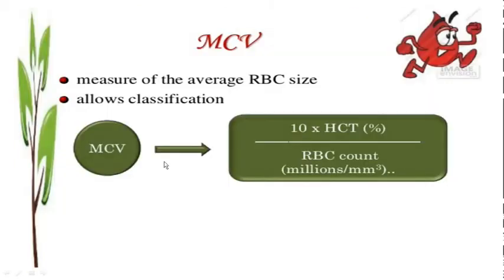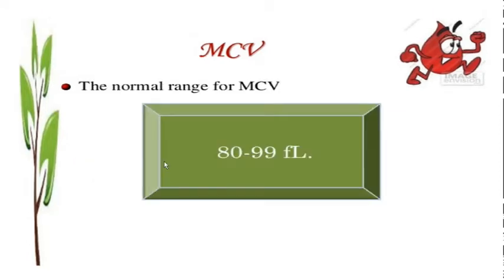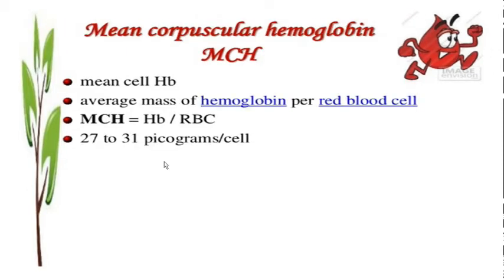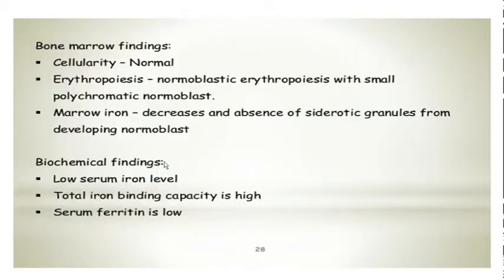Talking about the indices: MCV is basically a measure of the average size of the RBCs, with a normal range of 80 to 99, which will be lower in cases of iron deficiency anemia. MCHC is a concentration of hemoglobin in a volume of packed RBCs, with a normal range of 32 to 36, which again will be lesser in iron deficiency anemia. Mean corpuscular hemoglobin is an average mass of hemoglobin per RBC, which is normally 27 to 31 picograms per cell, and again this will be lesser in iron deficiency anemia.